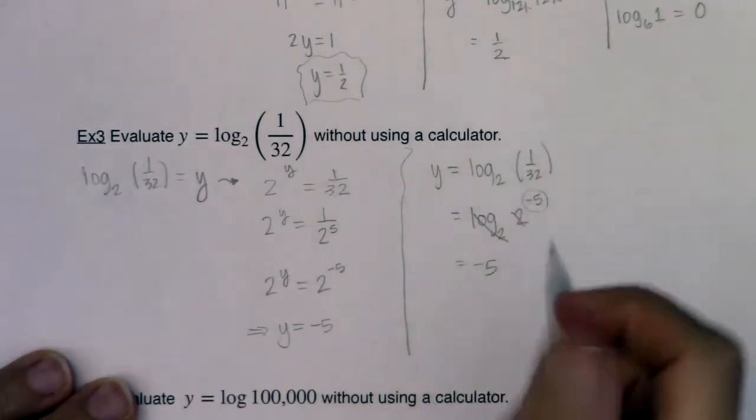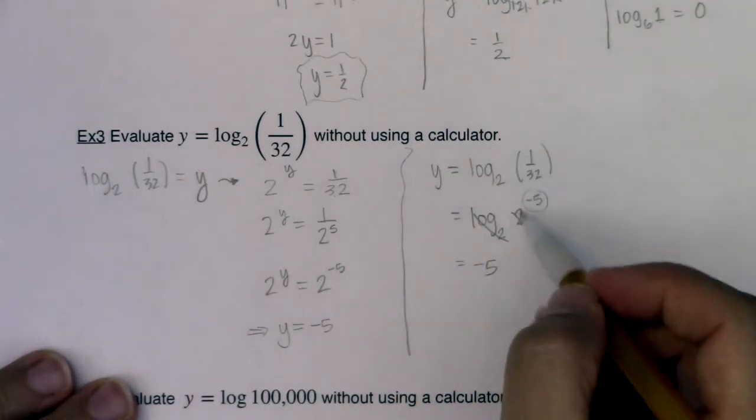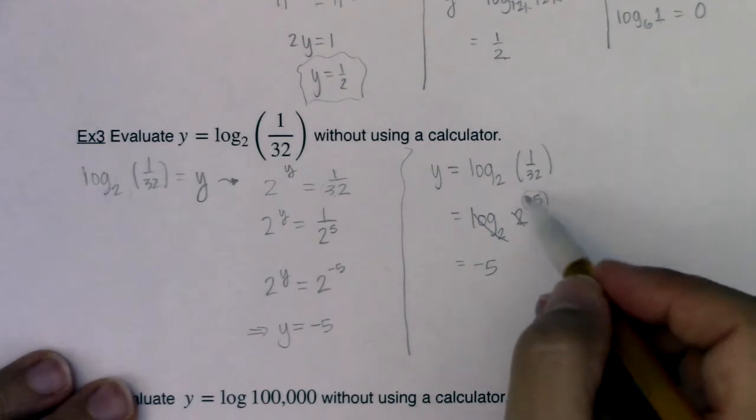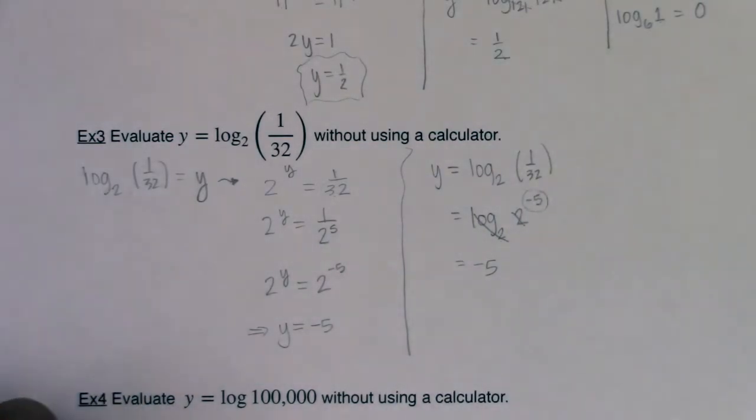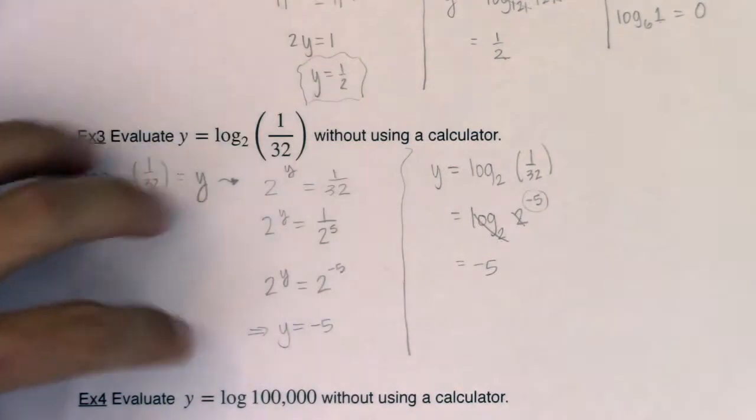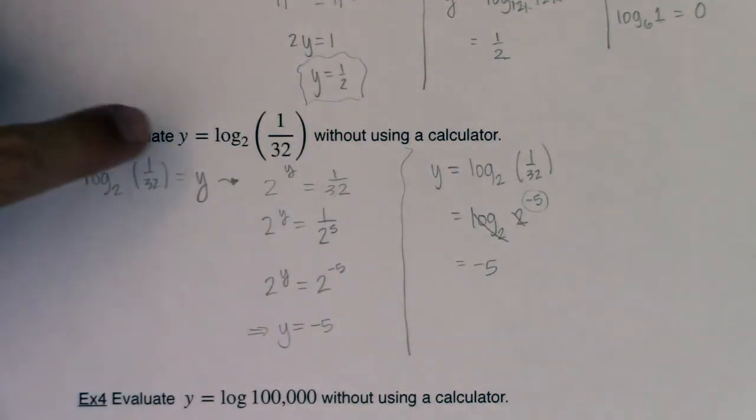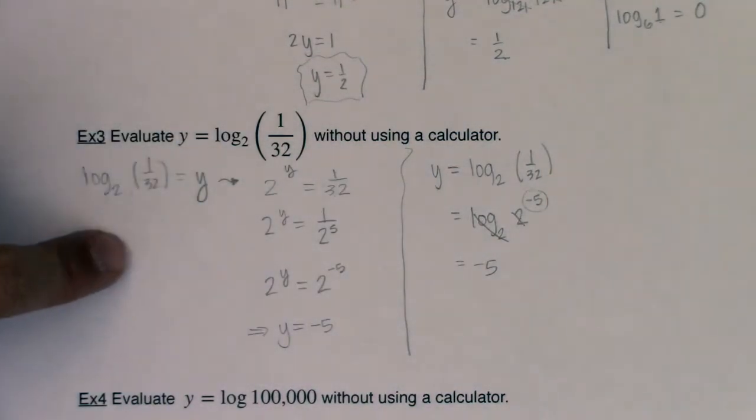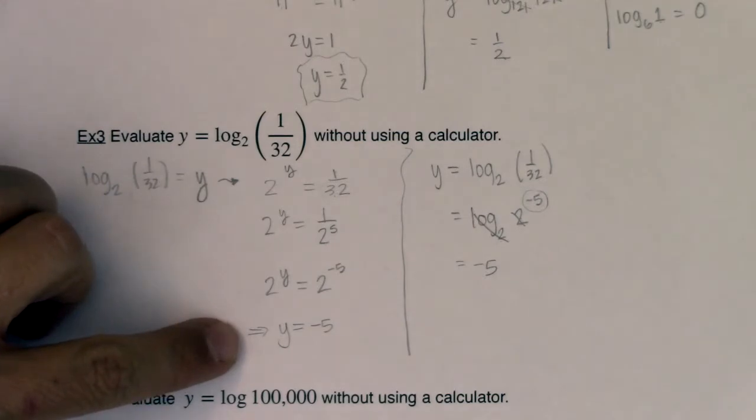In my opinion, this version is simpler. If I can just recognize 1 over 32 as a power of 2, then all I need is the exponent on that, and that's what I'm looking for. But you've got two versions. So if you feel more comfortable switching your logarithmic equation into an exponential equation, and then solving the exponential equation, great.